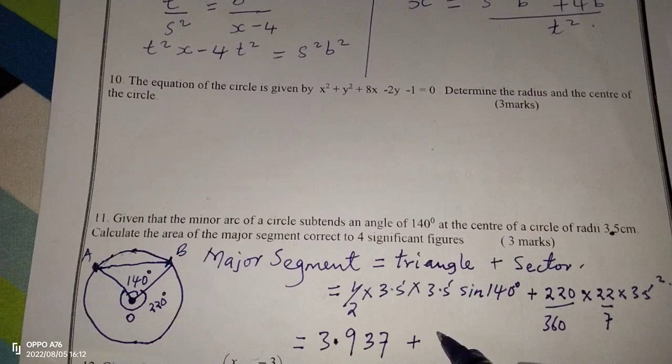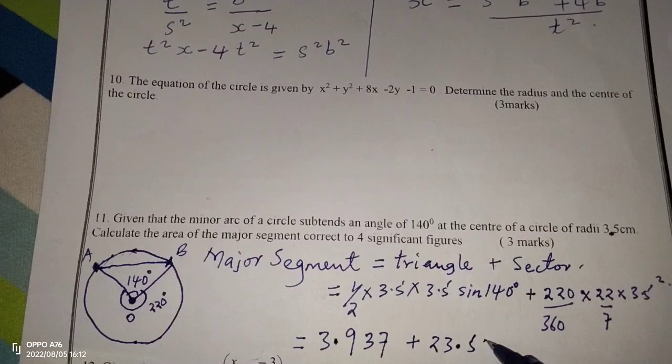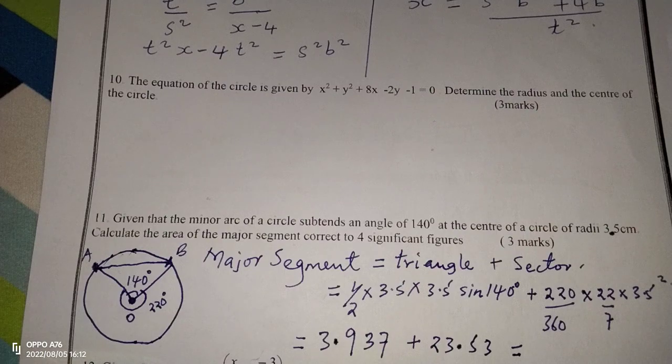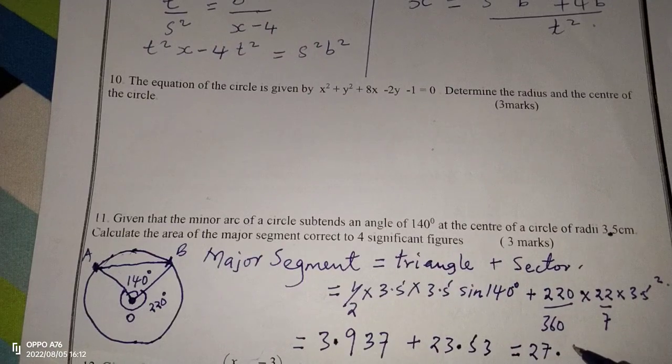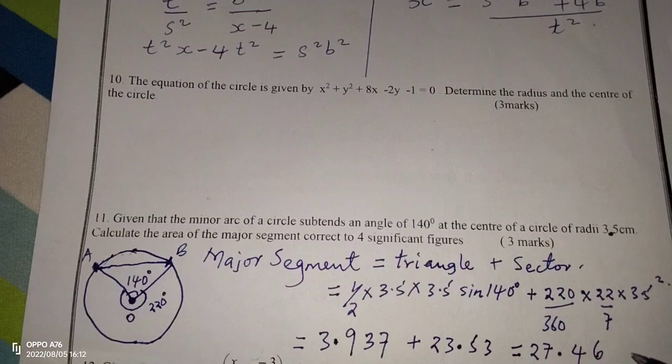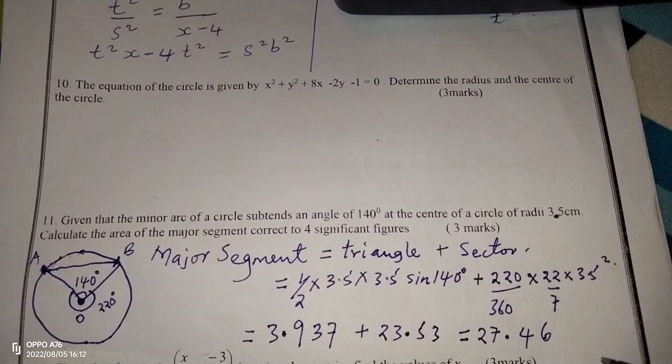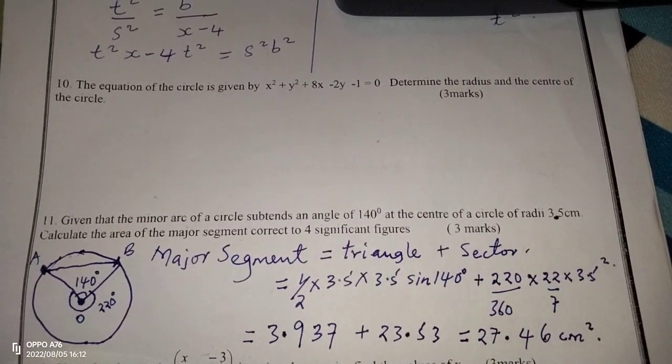So this is going to give us 23.5, so when we add up the area of the triangle and that of the sector, then we will get 3.937, and this will be 27.46. According to the instructions, we are told to give the area in four significant figures. So this will be the area to the accuracy of four significant figures.